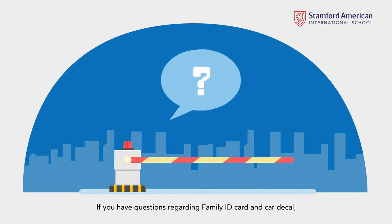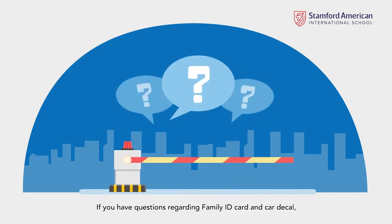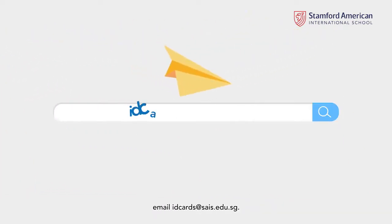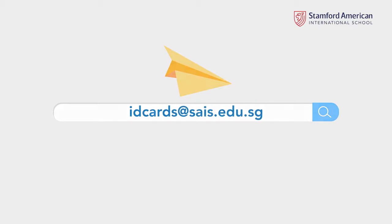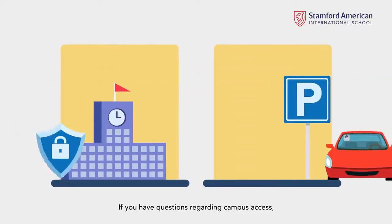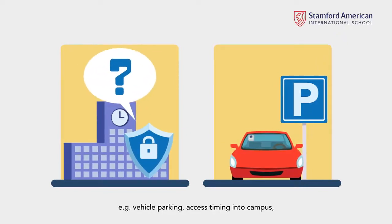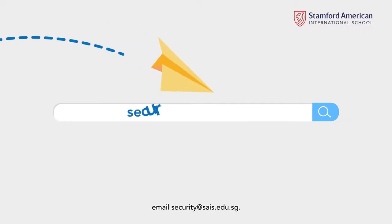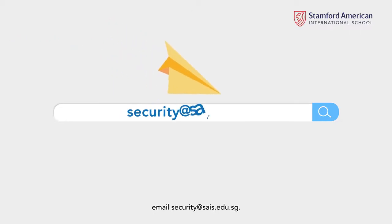If you have questions regarding family ID cards and car decals, email idcards at sais.edu.sg. If you have questions regarding campus access — e.g., vehicle parking or access timing into campus — email security at sais.edu.sg.